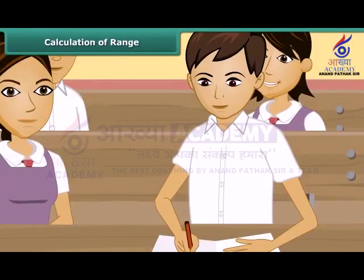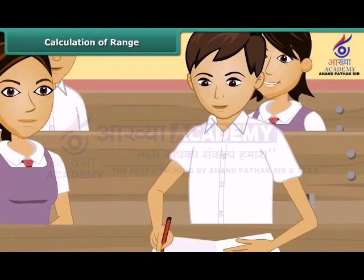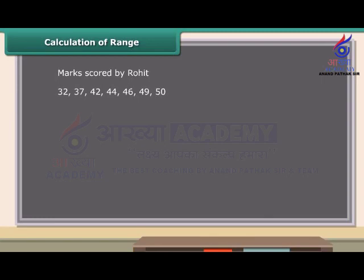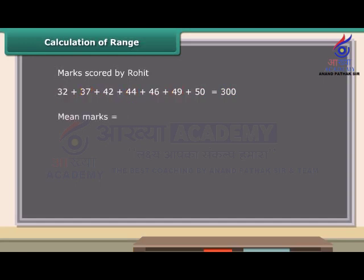Rohit is an intelligent and very studious boy in the class. He gave his maths test 7 times to improve his marks. The data shown here displays the marks scored by Rohit. Can you calculate the mean test marks of Rohit? Let us first add up the marks — the sum is 300. We know he gave the maths test 7 times. So the mean marks of Rohit are equal to 300 divided by 7, which is equal to 42.86.